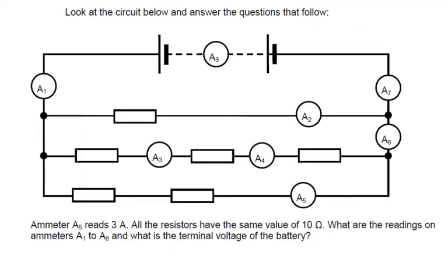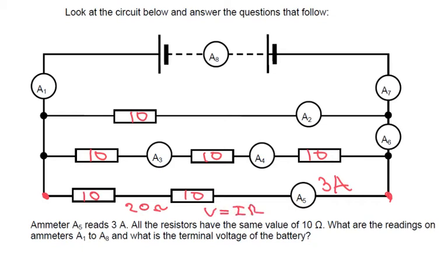Look at the circuit below and answer the questions that follow. Ammeter 5 reads 3 amps, so we've got 3 amps here. All the resistors have the same value of 10 ohms. What are the readings on ammeter 1 to ammeter 8, and what's the terminal voltage of the battery? Well, if we've got 10 plus 10 here, the total resistance of this branch is 20 ohms. So by V equals IR, the voltage between these two points is going to equal 20 times by 3, which equals 60 volts.